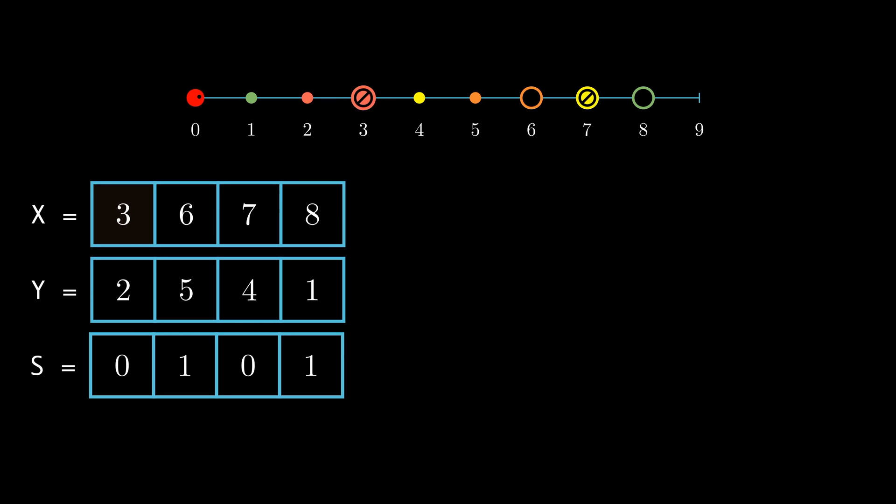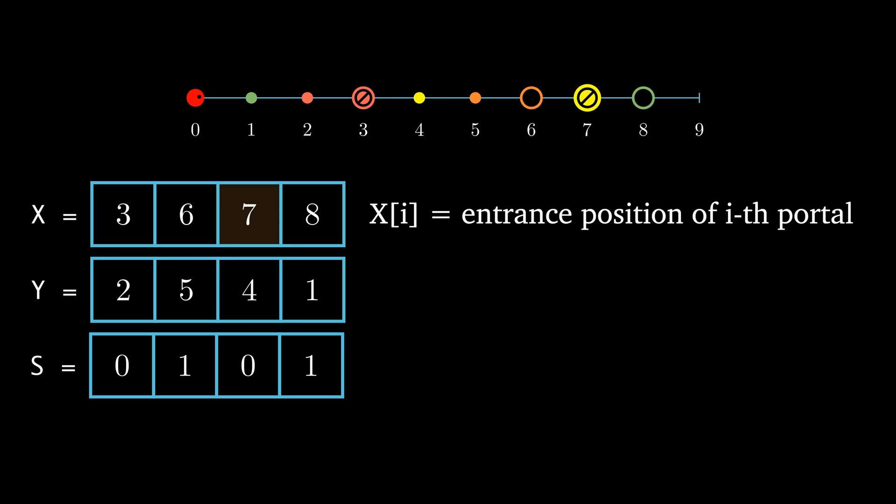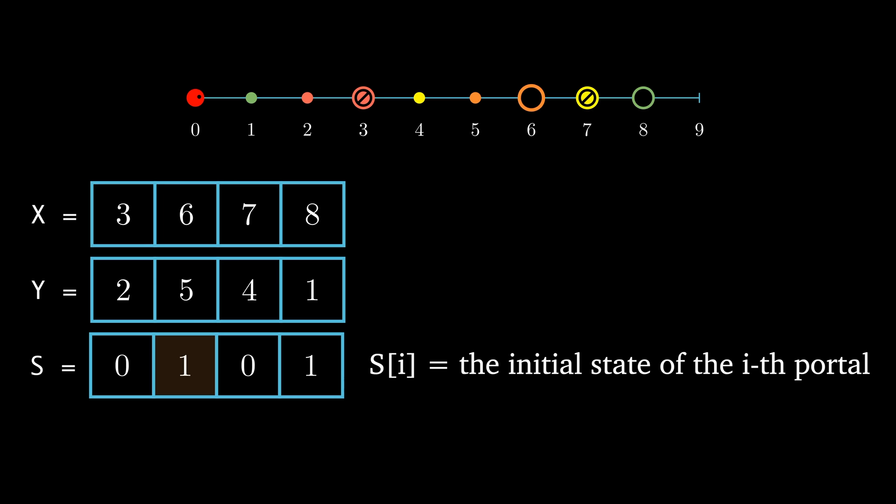To make illustrating our solution a bit easier, let's formalize our approach. Let x, y, and s be integer arrays of length n, where n is the number of portals. x of i represents the position of the entrance to the ith portal, y sub i is the exit position, and s of i is the initial state.